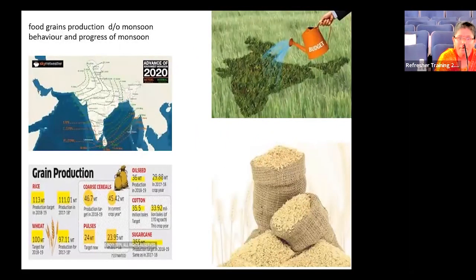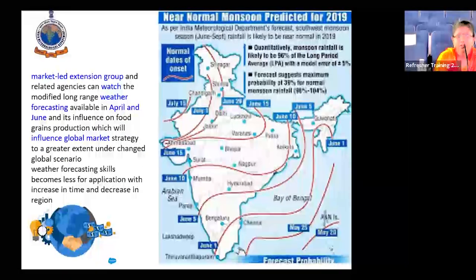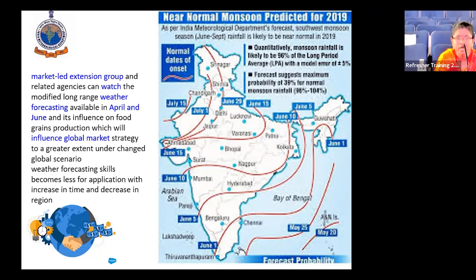IMD's monsoon forecasts for Kharif and Rabi seasons help all grain production areas assess expected agricultural output, productivity, and area coverage. The Morgan Lead Extension Group keeps a close eye on the weather forecast pathway to trace whether the monsoon is progressing normally and reaching all intended areas.